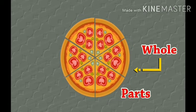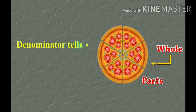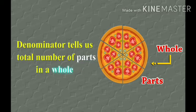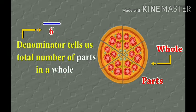This pizza is a whole. If we do not divide this pizza, then it is a whole. If we divide this pizza, then the pieces are called parts. The denominator tells us the total number of parts in a whole — so if we have six parts, then six is the denominator.